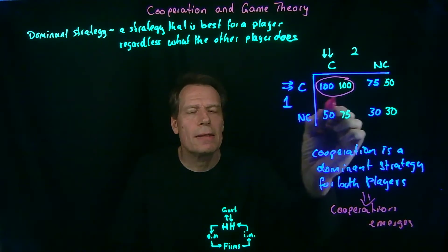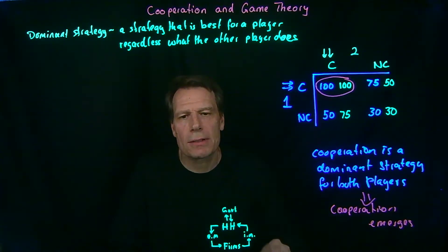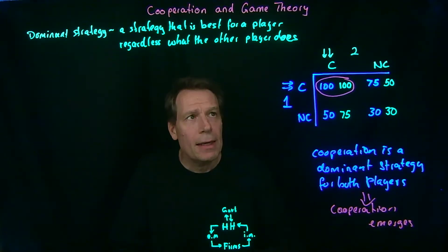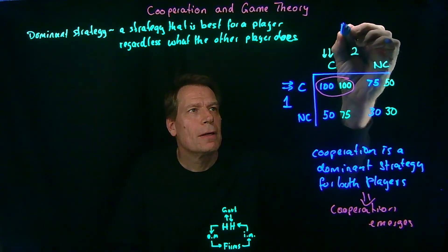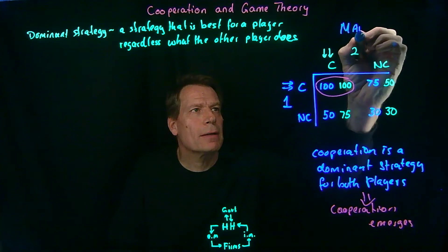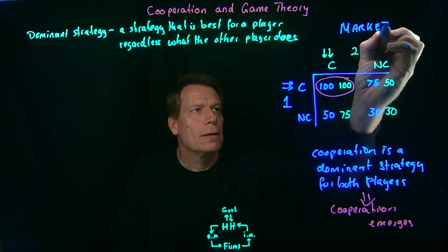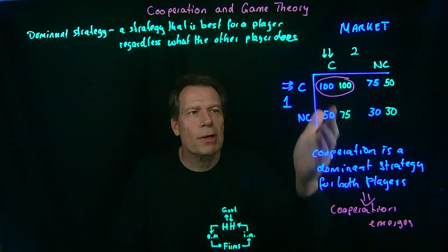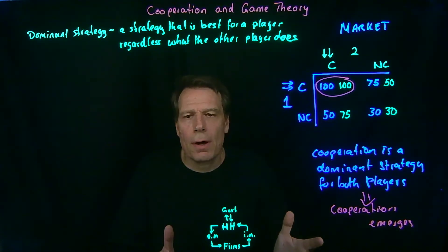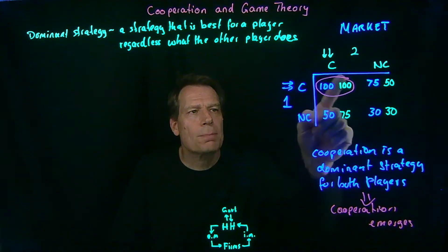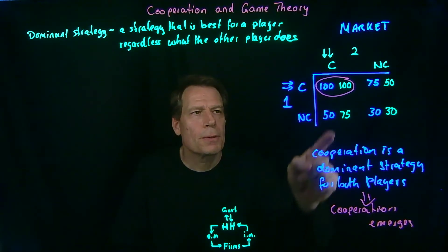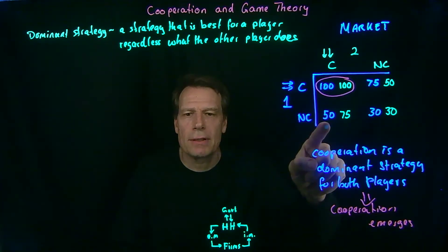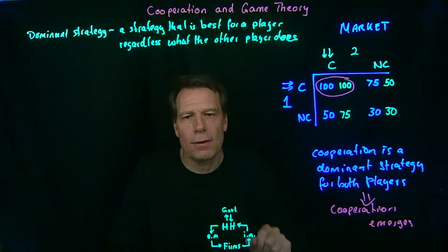As a result, cooperation is going to emerge in equilibrium — we end up in the box where both players cooperate. These are the typical incentives we would think of as market incentives in the absence of externalities. Cooperation emerges and leads to the highest possible social surplus: 200 here, versus only 125 or 60 in the other outcomes.